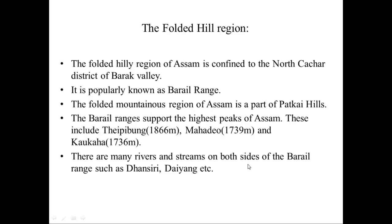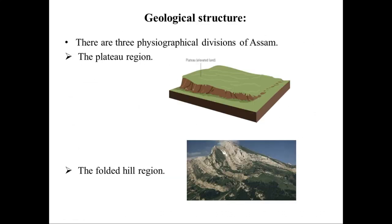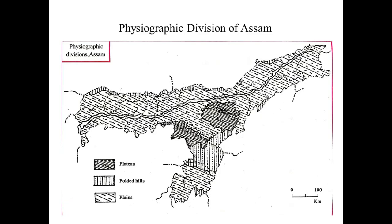The folded hill region of Assam is confined to the North Cachar Districts of Barak Valley, including the Dima Hasao district. It is also popularly known as Barail range. This folded mountains region of Assam is part of Patkai Hills. Patkai Hills is very important in Assam history because it is through the Patkai Hills that the Ahom entered the Brahmaputra Valley. The international border with Myanmar is also here.